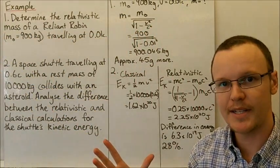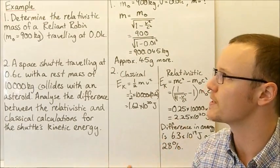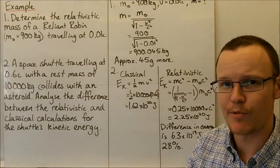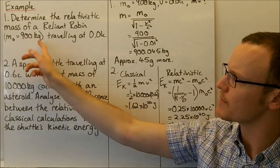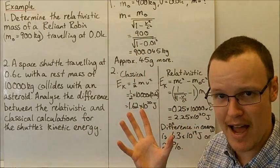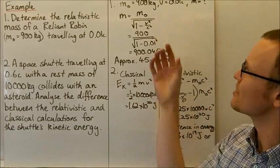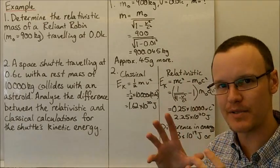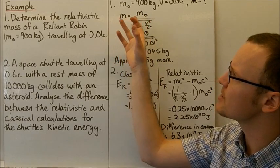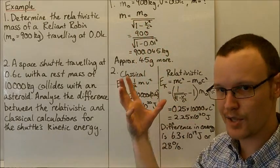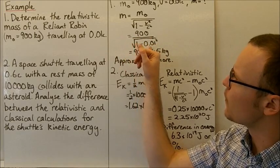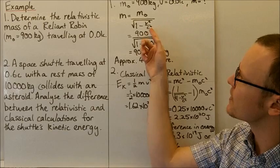Two examples to demonstrate the use of these equations. The first one: determine the relativistic mass of a Reliant Robin with a rest mass of 900 kilograms travelling at 0.01 times the speed of light. So M₀ is 900 kilograms, the velocity is 0.01c, and we're finding the relativistic mass. Substituting into the equation: relativistic mass equals rest mass divided by the square root of 1 minus velocity squared over c squared — 900 divided by the square root of 1 minus 0.01 squared, with the c² terms cancelling.